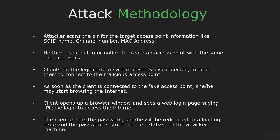Now let's see the anatomy of the Evil Twin attack. First off, the attacker scans the air for the target access point information like SSID name, channel number and MAC address. He then uses that information to create a malicious wireless network with the same characteristics.